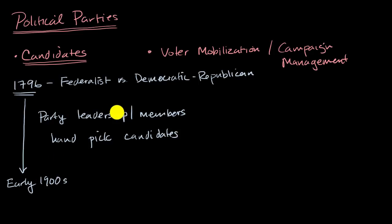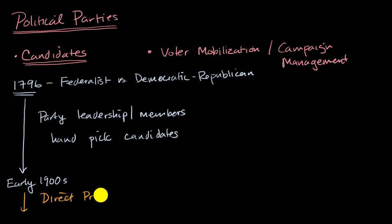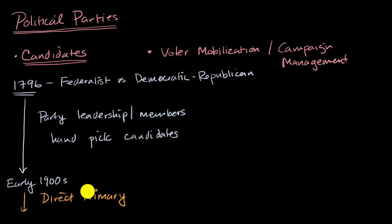But in the early 1900s, there was a movement to say this is not so democratic — to handpick the candidates that people have to choose from. And so this is when you start to have the direct primary system, where to choose the candidates that represent one party or another, you hold elections. Those elections could be closed primaries, where you have to be a registered Republican to vote for who represents the Republican Party, or a registered Democrat to see who represents the Democratic Party. But they also have open primaries, where anyone could vote in the Democratic or Republican primary. And this is happening to this day.